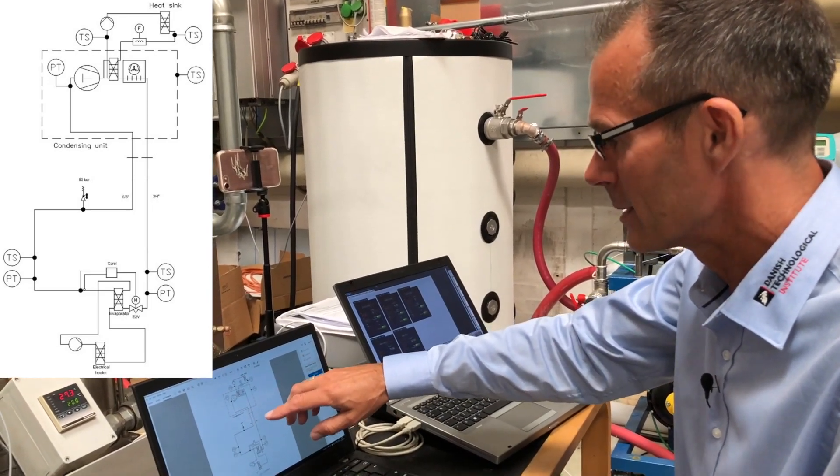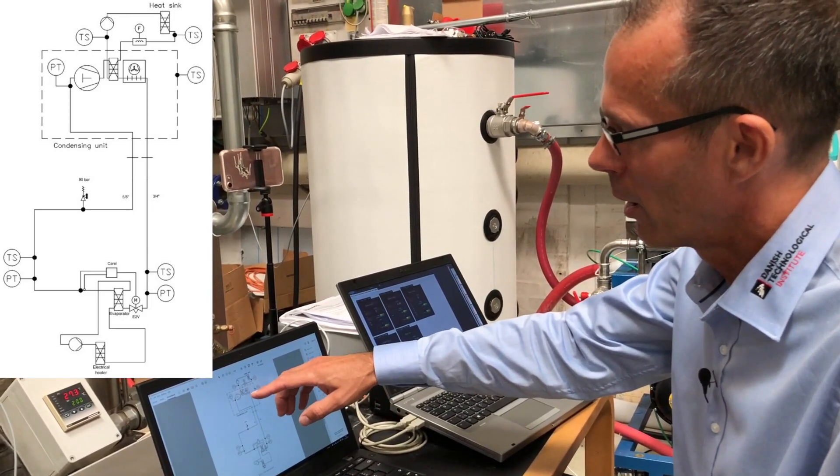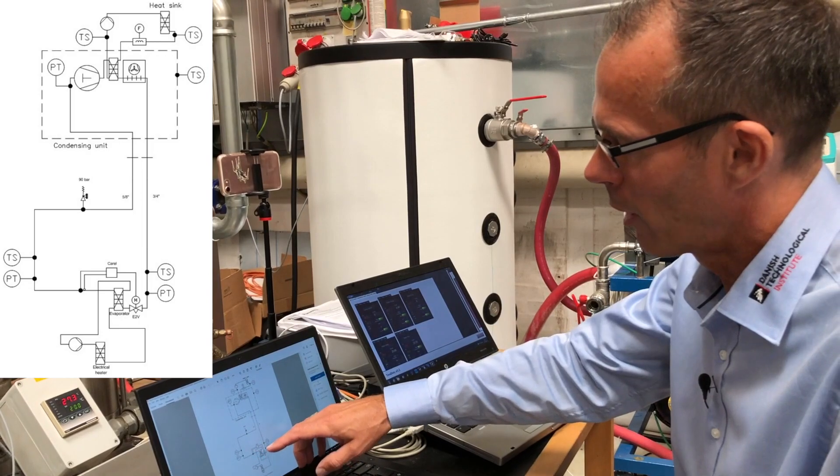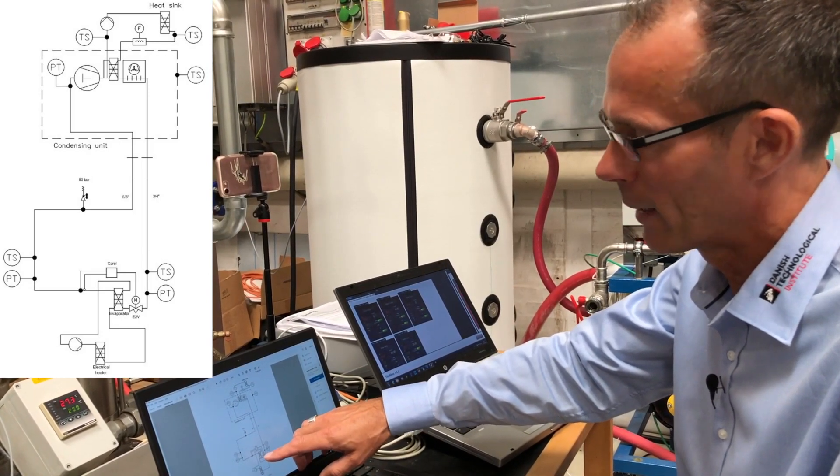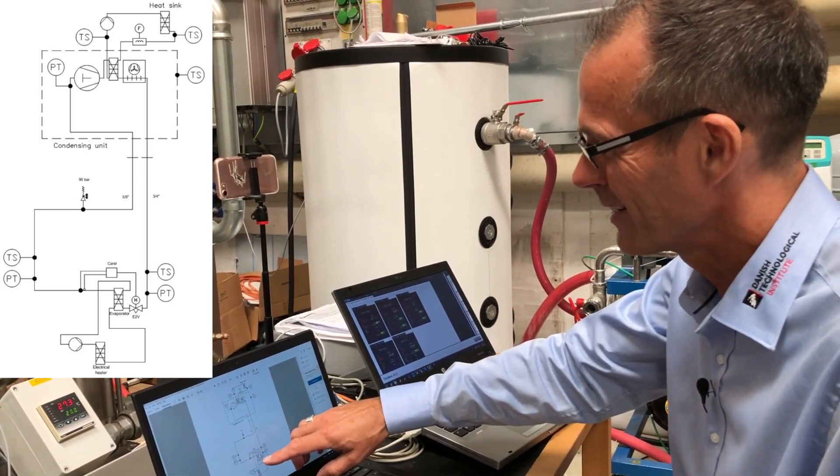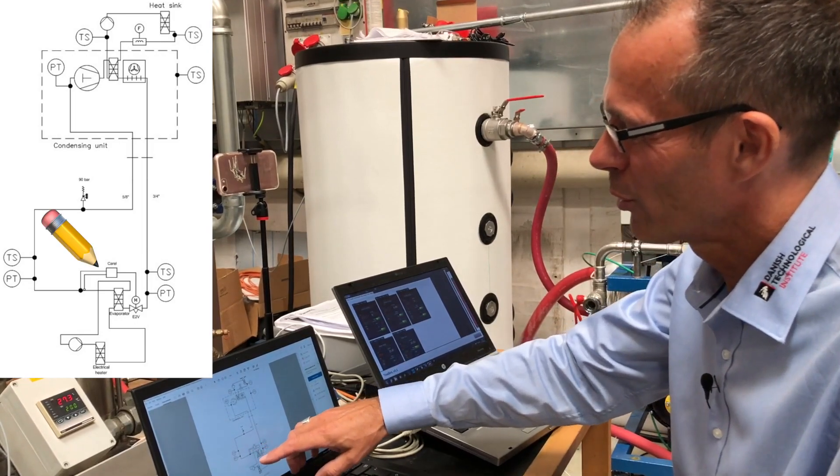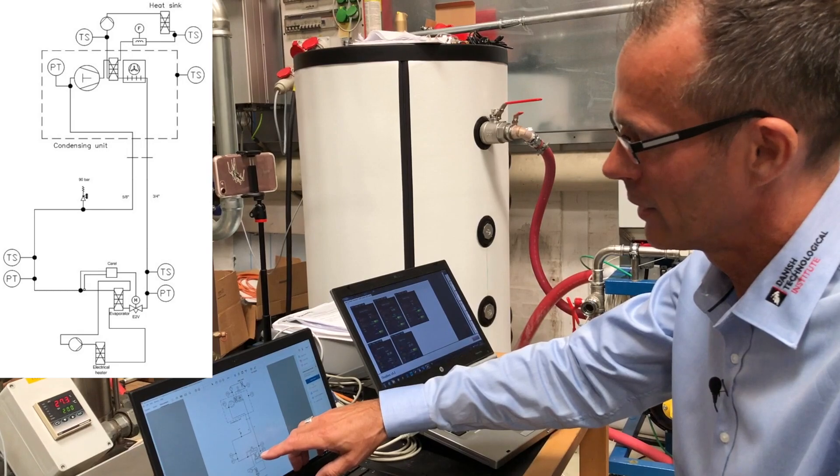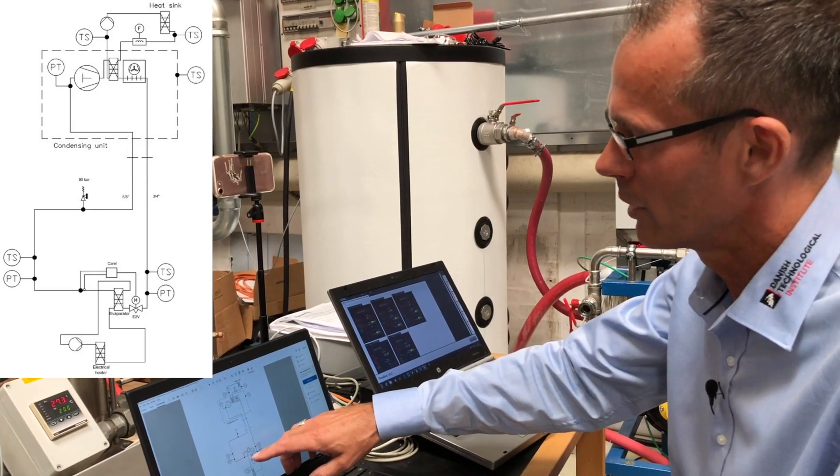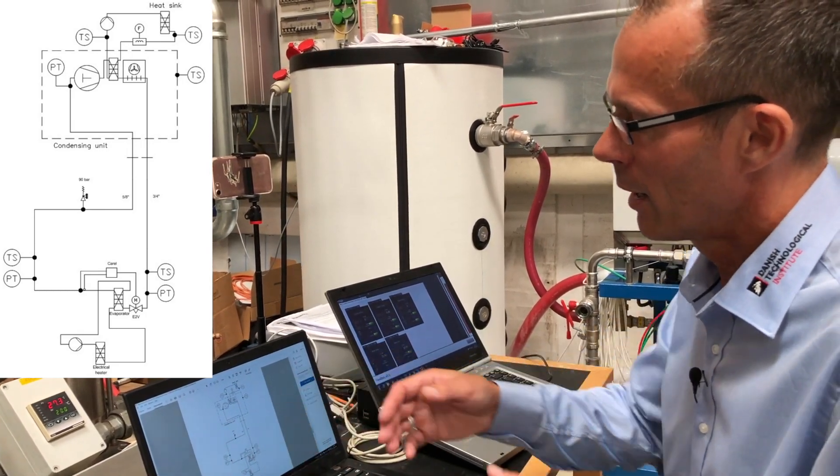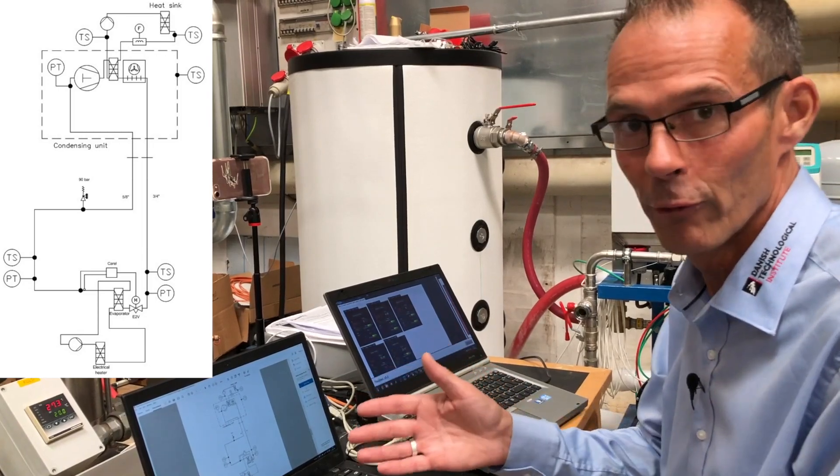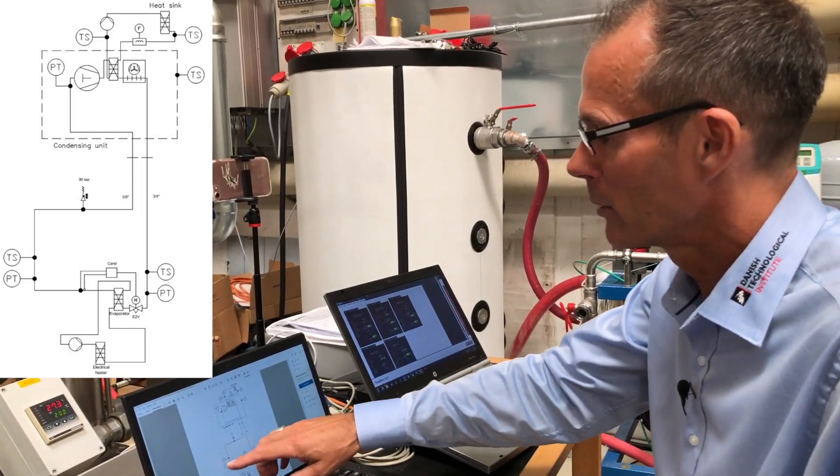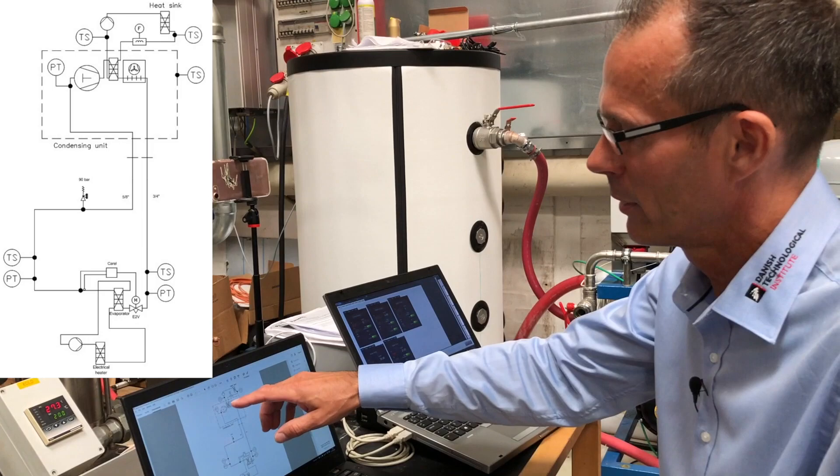The setup is that we are producing liquid for our evaporator controlled by expansion device, superheat controlled. The superheat controller is adjusting the injected liquid to the evaporator and is evaporating to a superheat of 10 degrees and the gas is returned back to the condensing unit.